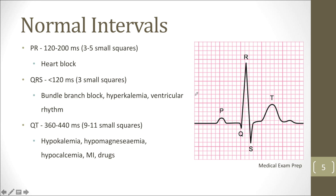The next thing is the different intervals. I always found these difficult to remember, so I use a gestalt approach — does it look normal or not? The PR interval should be 120 to 200 milliseconds, which is three to five small squares. The QRS should be less than 120 milliseconds, or three small squares. And the QT interval should be somewhere between nine to eleven small squares.